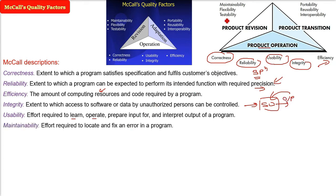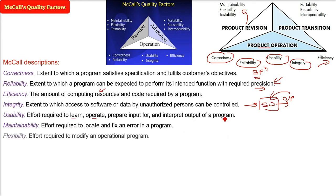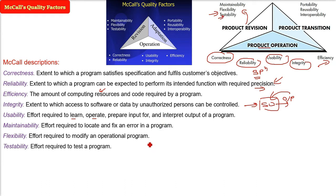Maintainability is about how much effort is required to first locate a problem or error and then fix it. There is a whole part of software engineering dedicated to maintenance. Flexibility is the effort required to modify a program that is already operational. Testability is the effort required to test a software.